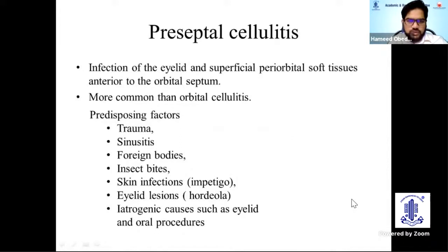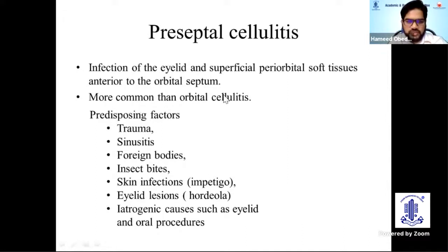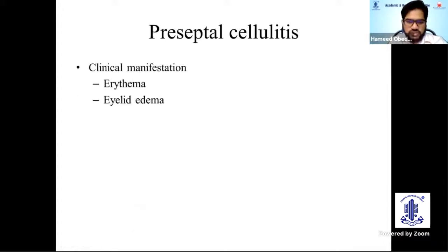Preseptal cellulitis is the infection of the eyelid and superficial periorbital soft tissues anterior to the orbital septum. It is more common than orbital cellulitis. The predisposing factors include trauma, sinusitis, foreign bodies, insect bites, skin infection, eyelid lesions, and iatrogenic causes such as eyelid and oral procedures.